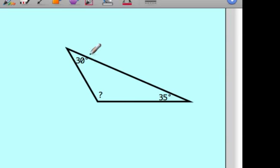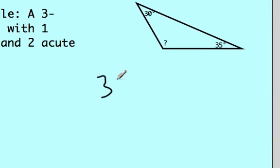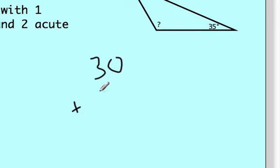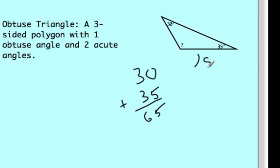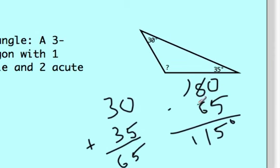So I have 30 and 35 here. Let's add those up. That's 65. And then I do 180 minus 65. So that missing angle there is 115 degrees. And that's one angle that's 115 degrees. That's why this is classified as an obtuse triangle.